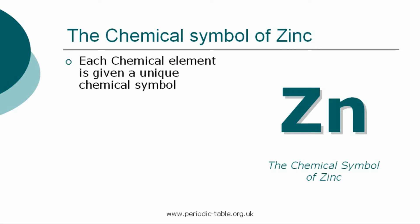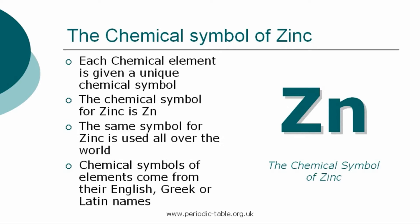Each chemical element is given a unique chemical symbol, which is used all over the world. The chemical symbol for zinc is Zn. The chemical symbols of elements come from their English, Greek, or Latin names. The first letter of a symbol is always a capital letter, and if there are any subsequent letters, they are expressed in lower case.